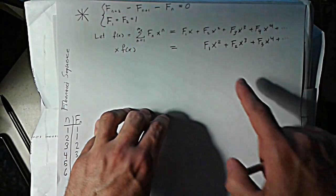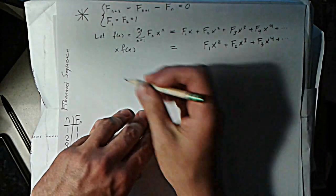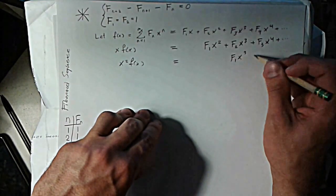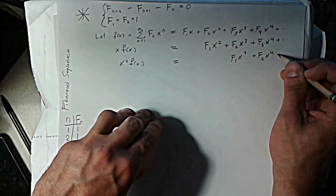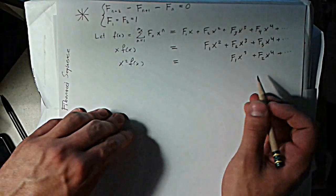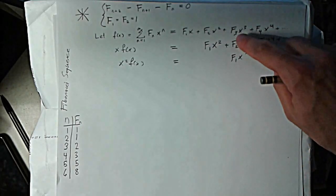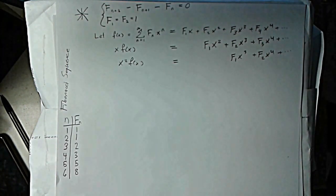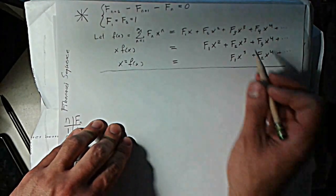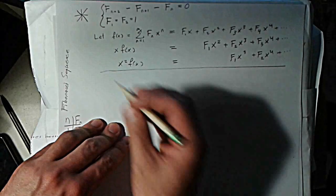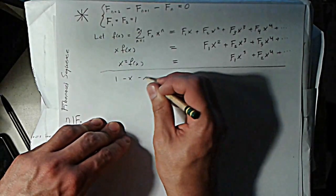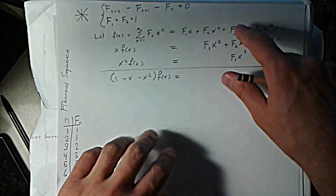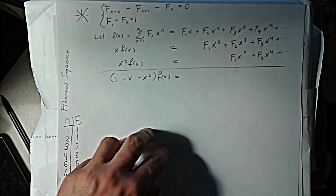And you'll notice that what I'm getting here is these coefficients F₃ is lining up with the F₂. So if I do this one more time, then I'll have it look like this. And the point of doing this is that now if I just took F₃ minus F₂ minus F₁, that's zero by this recurrence relation. F₄ minus F₃ minus F₂, that's zero. So I just want to take the first line and subtract the second two lines.